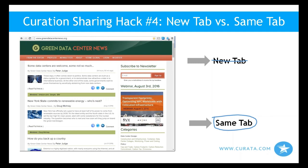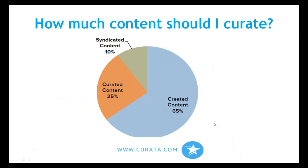On how much content to curate: a survey found that people who get the best returns are creating 65 percent original content, curating about 25 percent, and syndicating or licensing third-party content about 10 percent of the time. In terms of time allocation: if you're blogging two to three times a week, you'd be curating every day.